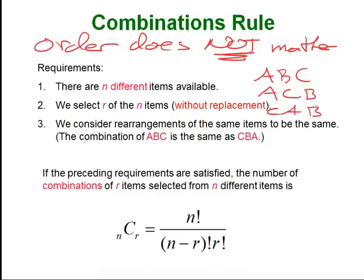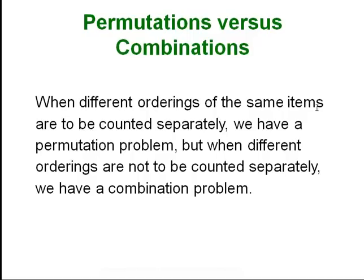Think of it this way: instead of choosing three trophies to display on your mantel, you're choosing three trophies to throw away. Does it matter in which order you chose those three? If you chose A, then B, then C versus A, then C, then B — have you really chosen a different set of trophies to throw away? No. Any time you're choosing a set of things, that's usually a telltale sign that order doesn't matter.